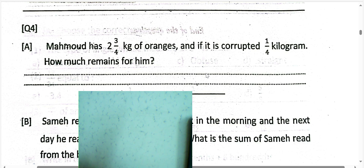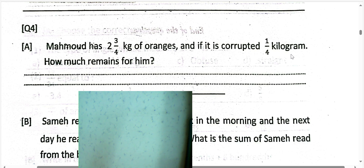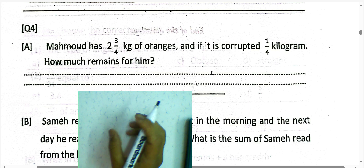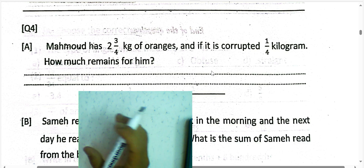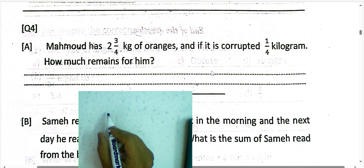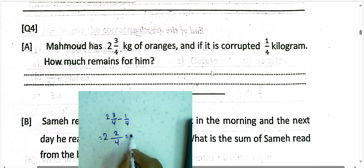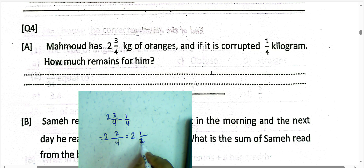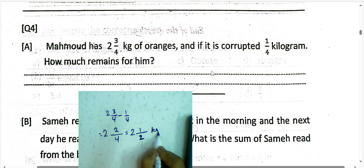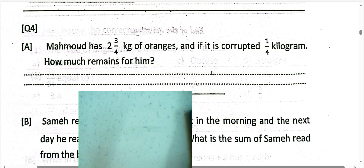Next question: Mahmoud has 2 and 3/4 kilograms of orange. If he used 1/4 kilogram, how much remains? We find the difference: 2 and 3/4 subtract 1/4. The whole number stays 2, and 3 minus 1 equals 2 over 4, which simplifies to 1/2. The result is 2 and a half kilograms remaining.